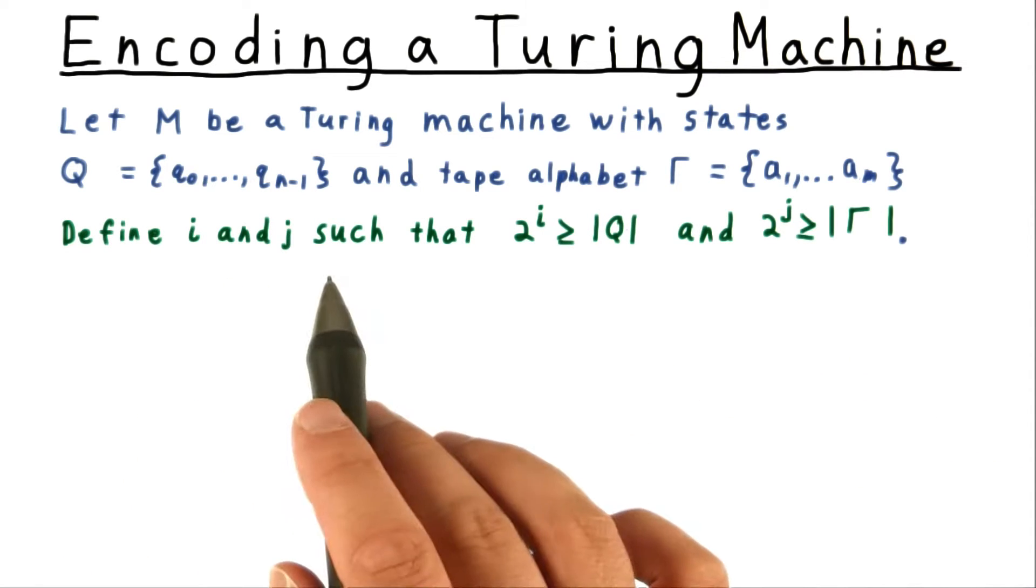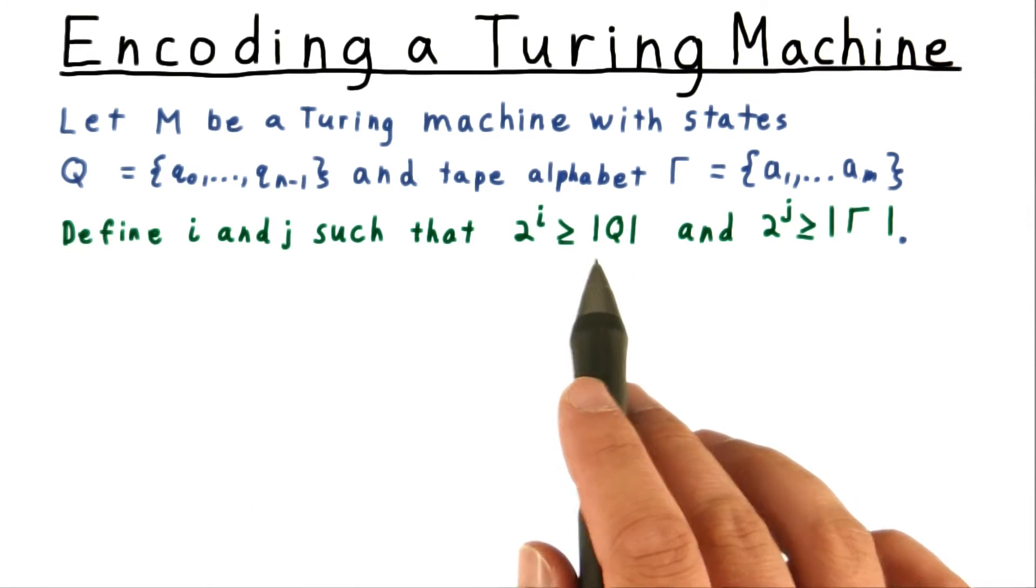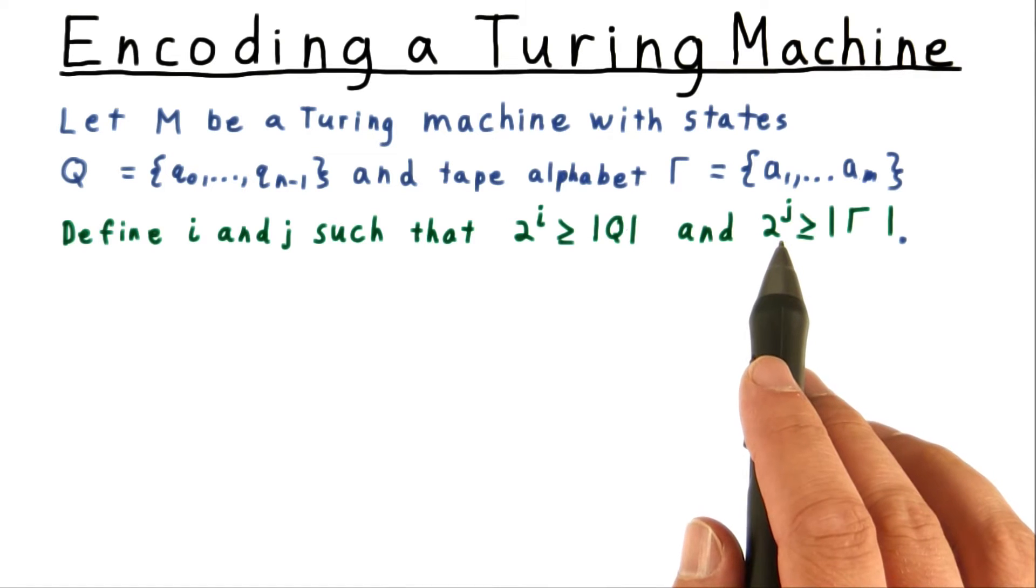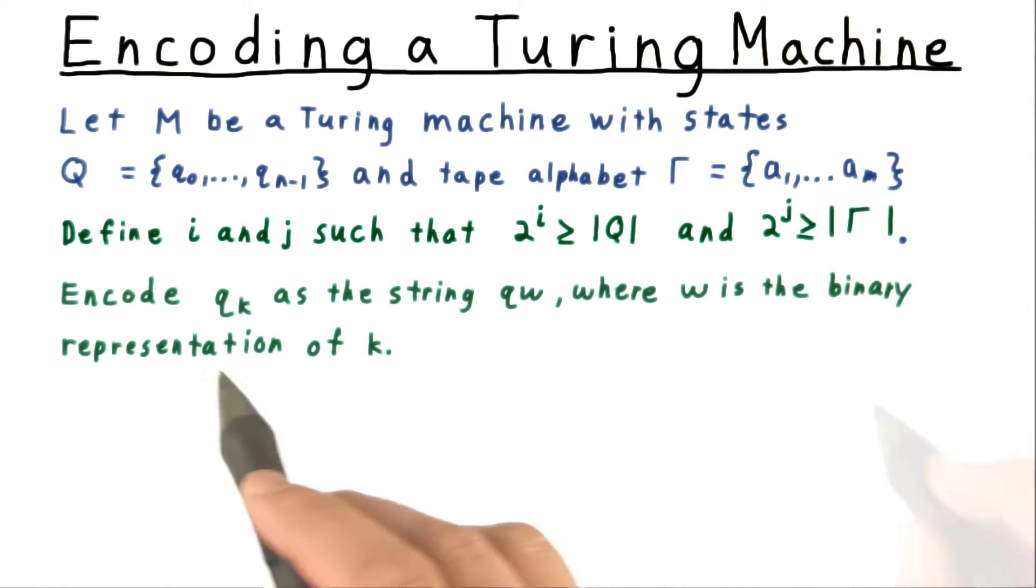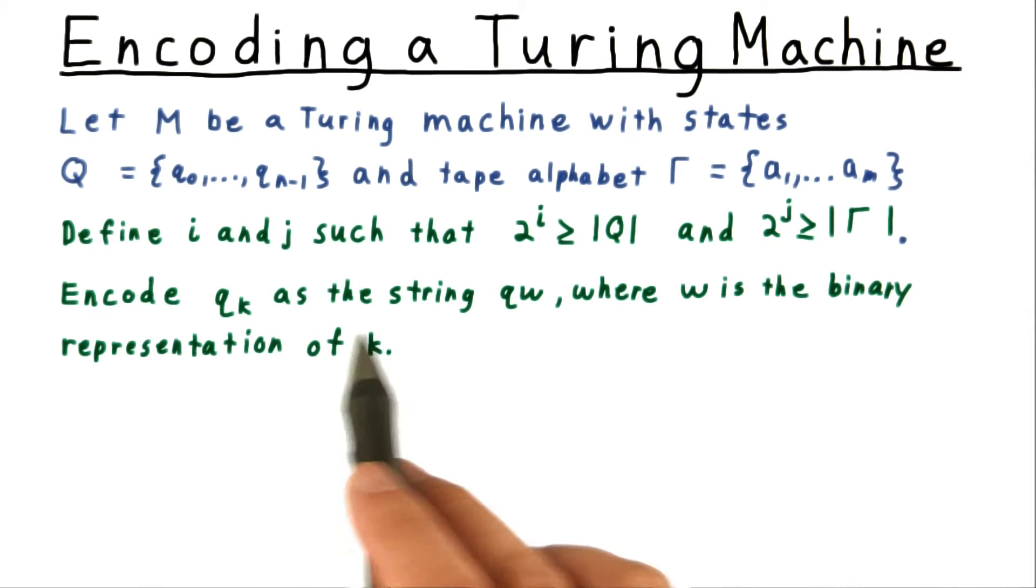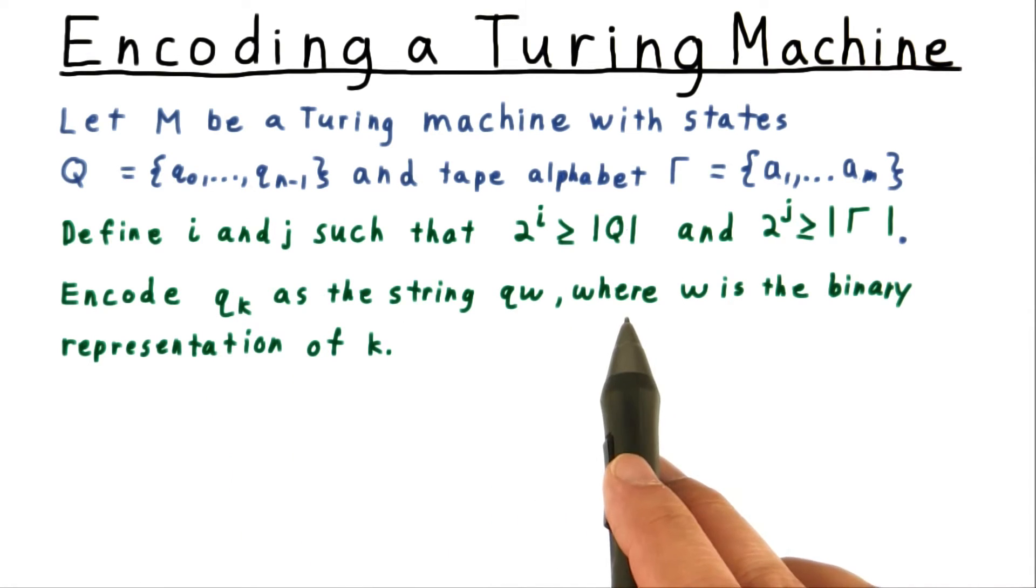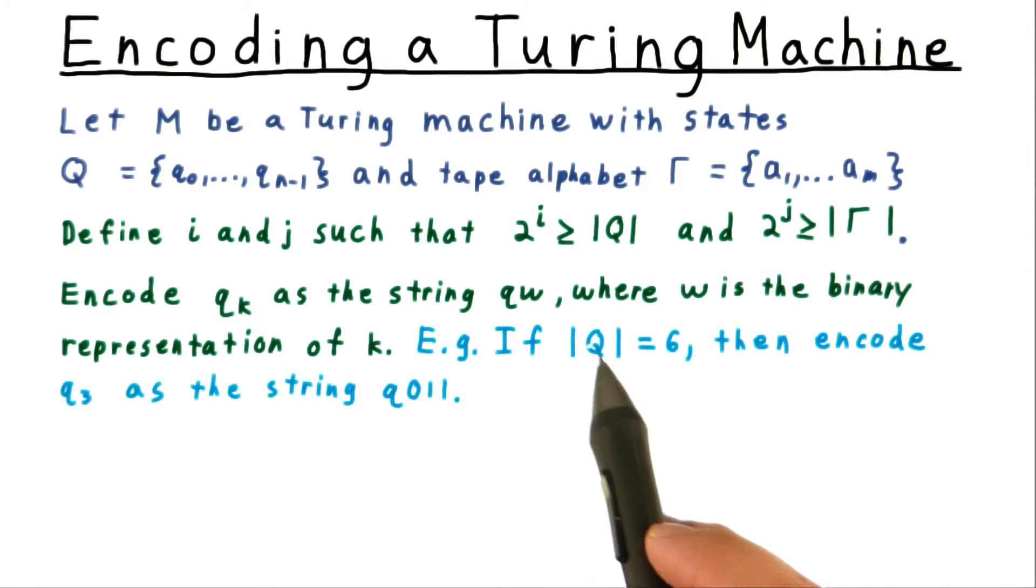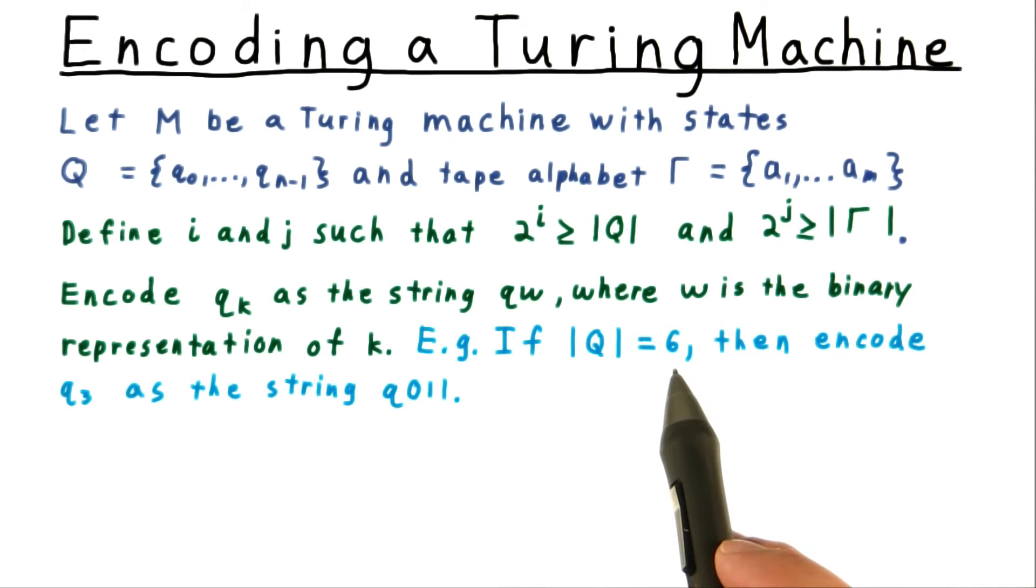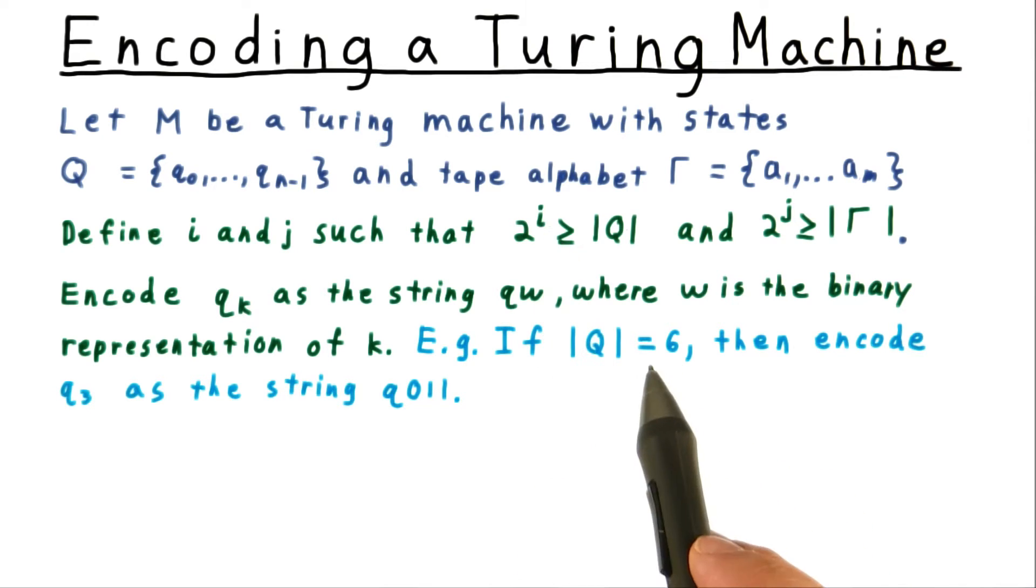We'll define i and j such that 2 to the i is at least the number of states, and 2 to the j is at least the size of the tape alphabet. Then we can encode a state qk as the string qw, where w is the binary representation of k. For example, if the number of states is 6, then we would need i to be 3.